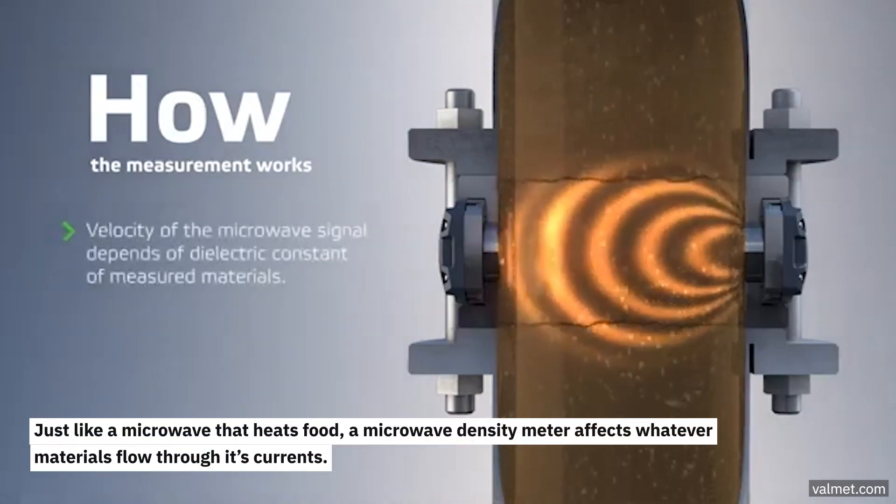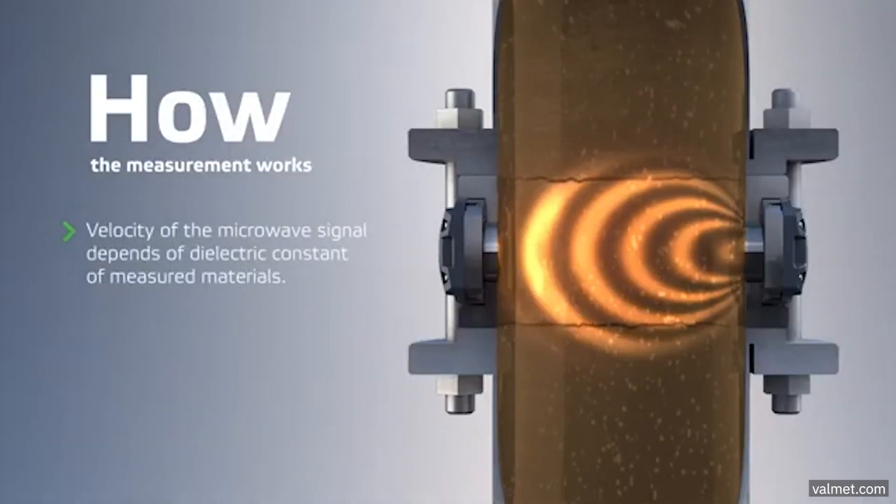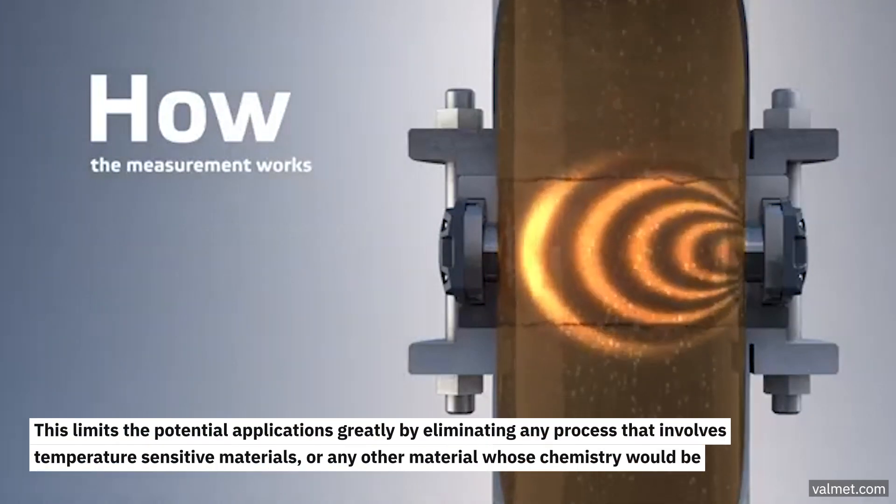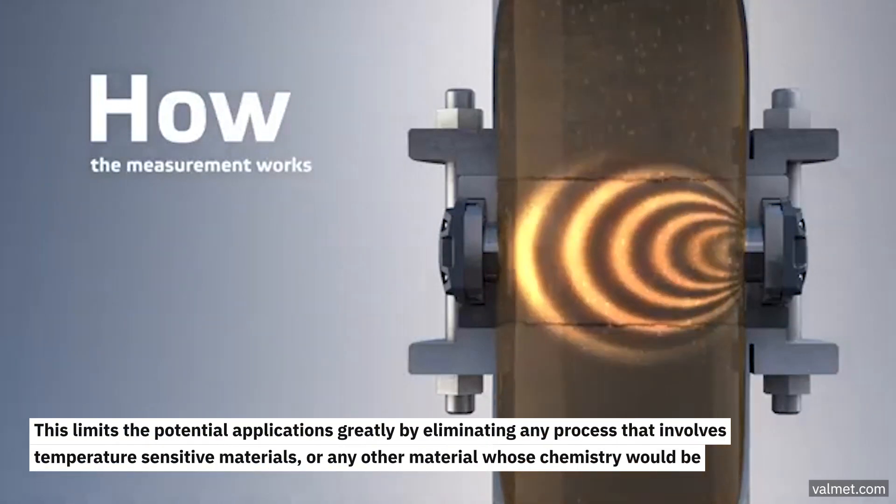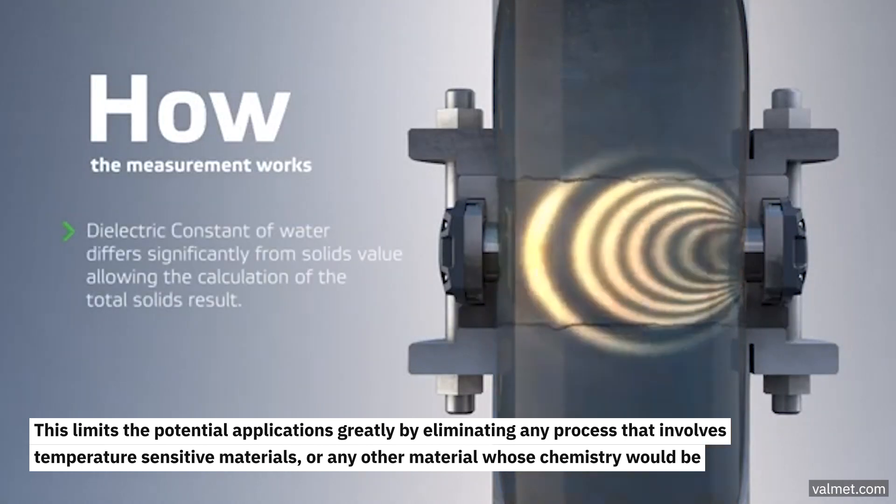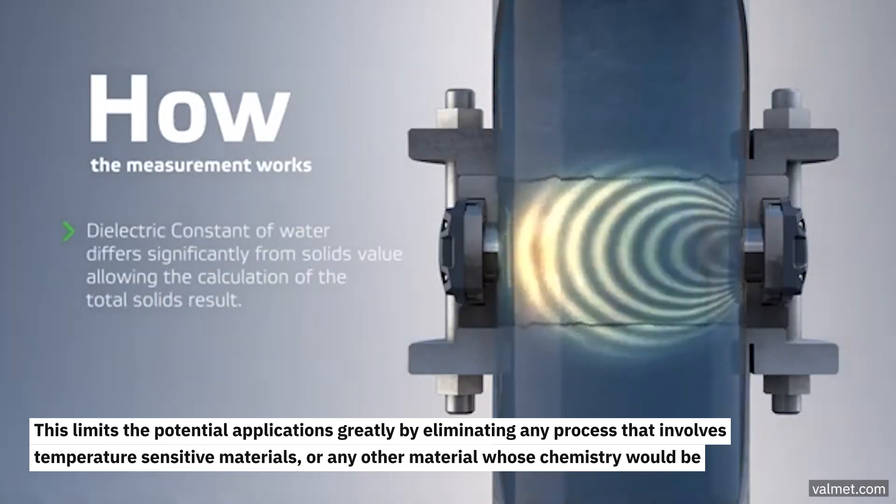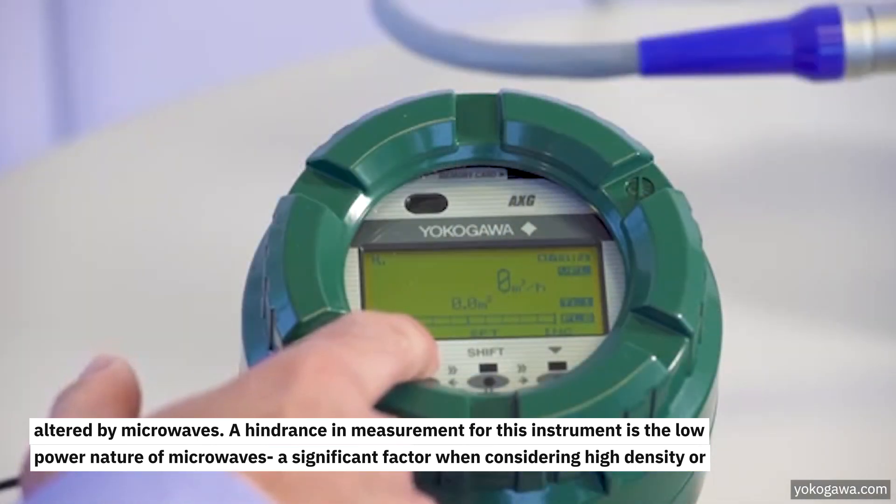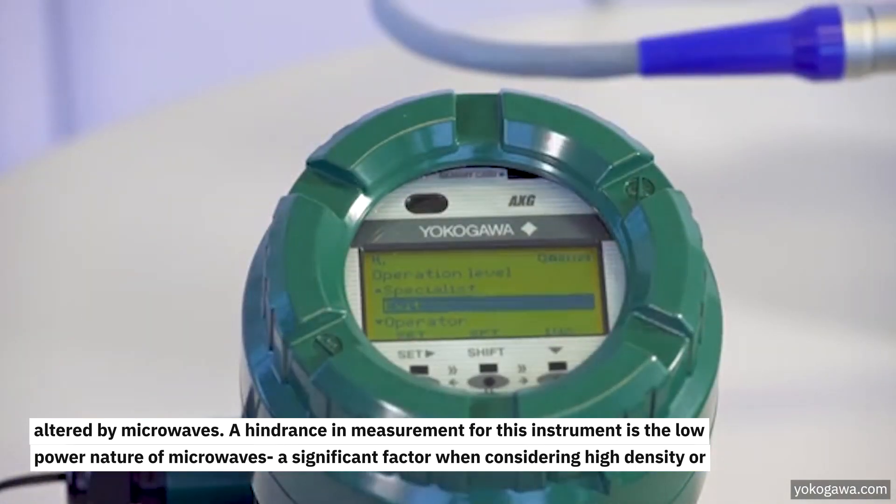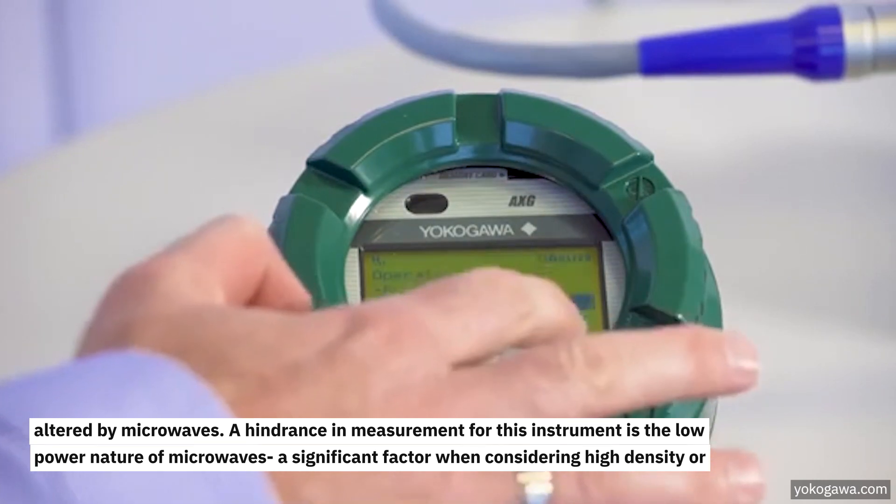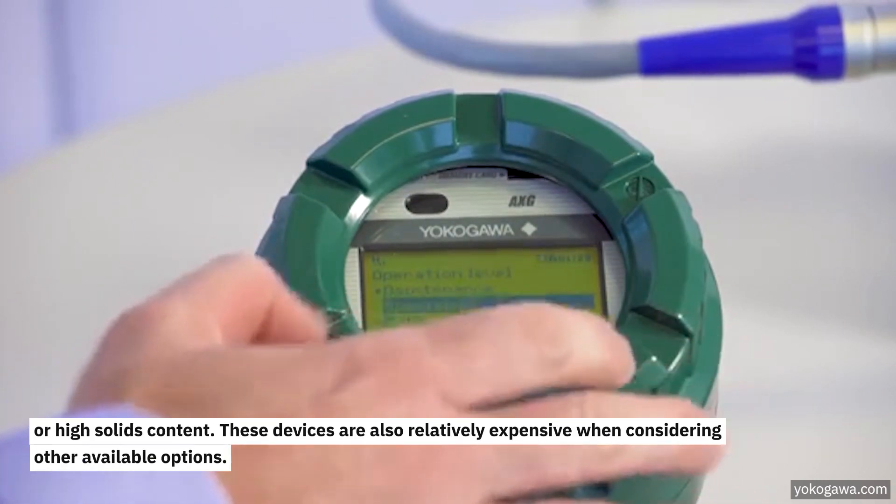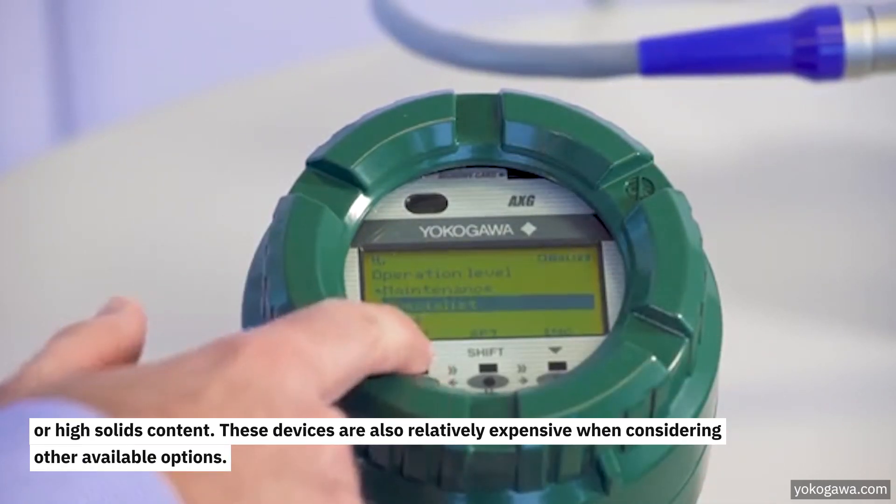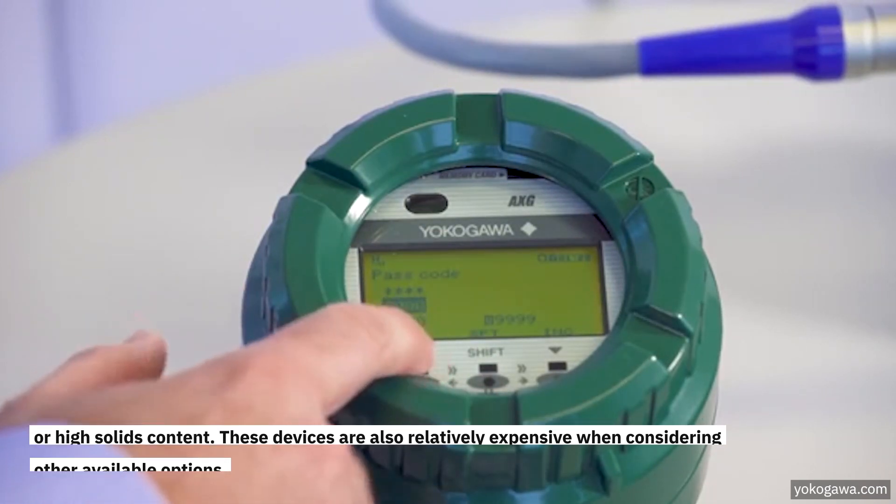Just like a microwave that heats food, a microwave density meter affects whatever materials flow through its currents. This limits the potential applications greatly by eliminating any process that involves temperature-sensitive materials or any other material whose chemistry would be altered by microwaves. A hindrance in measurement for this instrument is the low power nature of microwaves, a significant factor when considering high density or high solids content. These devices are also relatively expensive when considering other available options.